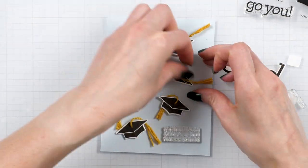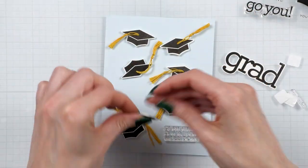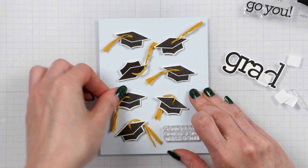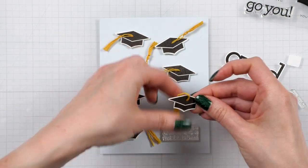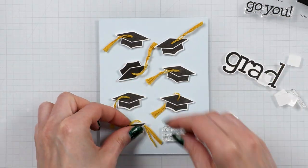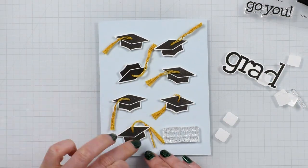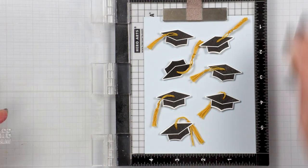I first foam mounted each cap making sure that it was facing a different way. I did not secure the tassels so they move freely and they can fall onto either side, but you can add a dot of glue if you'd like to keep them secured in a specific spot on your card.